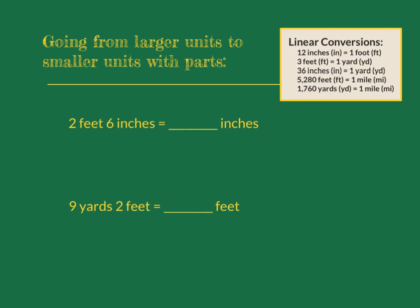Now here we have a few problems where the math doesn't end quite as neat and tidy as the others. In these problems, we don't just have one unit, we have a couple, because sometimes life is messy. Here we have 2 feet 6 inches and we are converting it to just inches. The 6 inches matches our target unit, so we're going to set it aside and just convert the 2 feet. If I have 2 feet and there are 12 inches in each foot, that means together I have 24 inches. But I can't forget about those 6 inches — adding them to the 24 gives me a total of 30 inches.